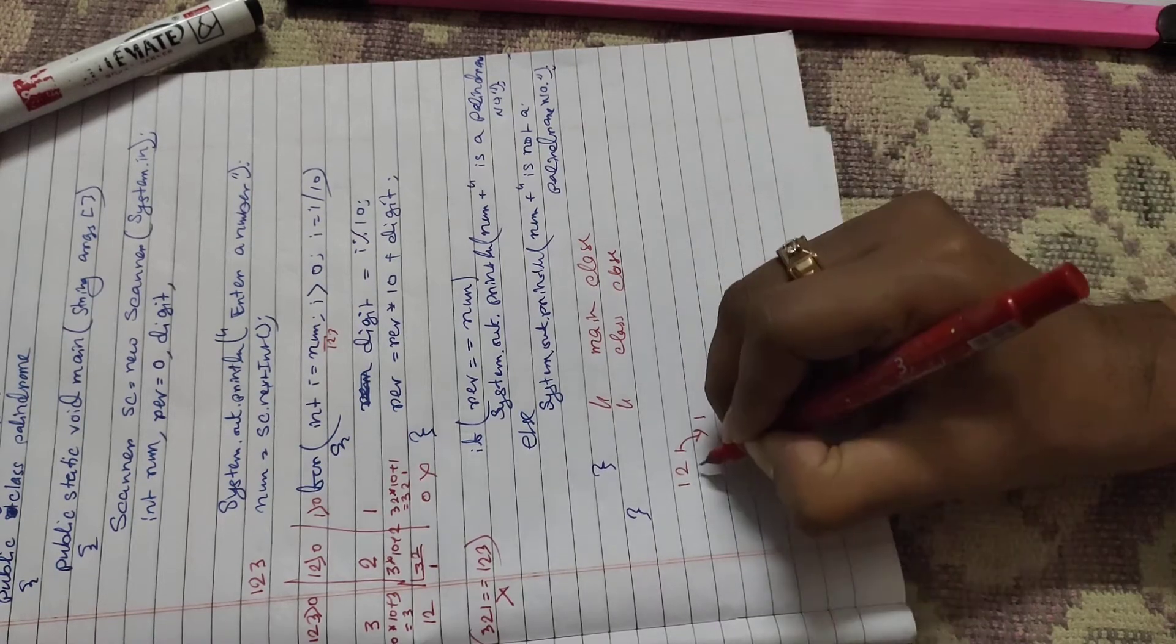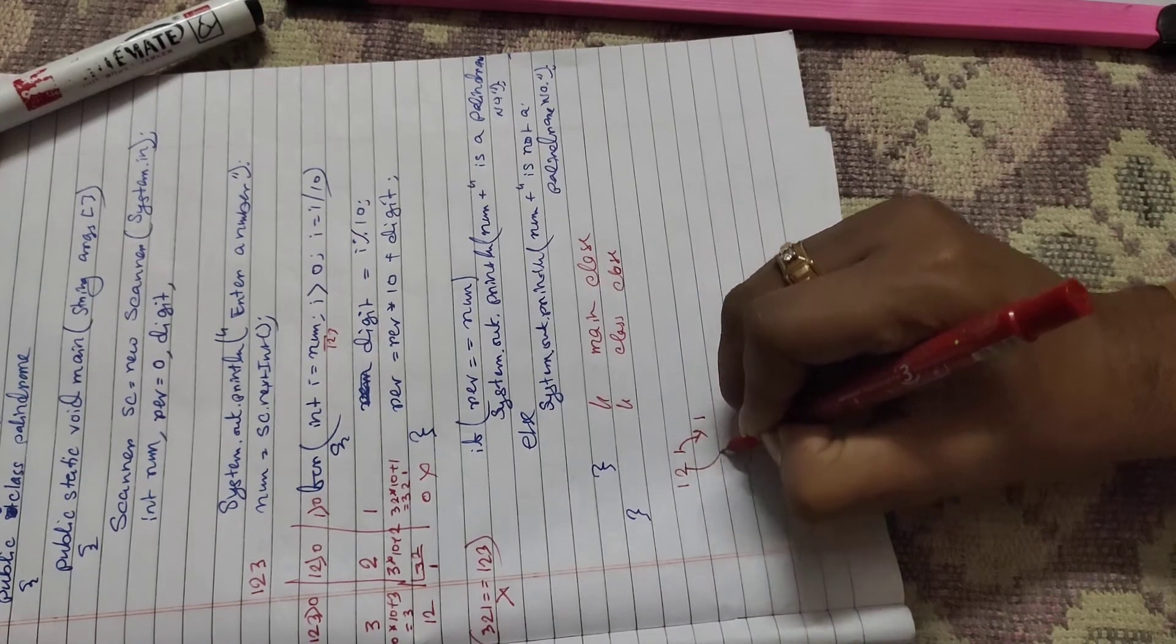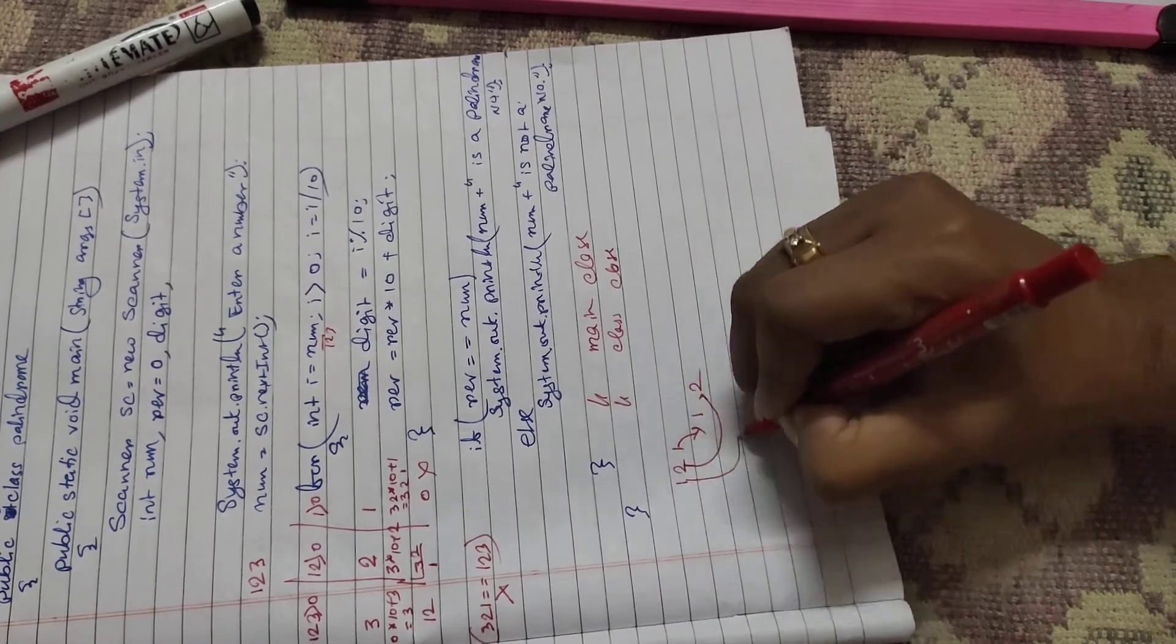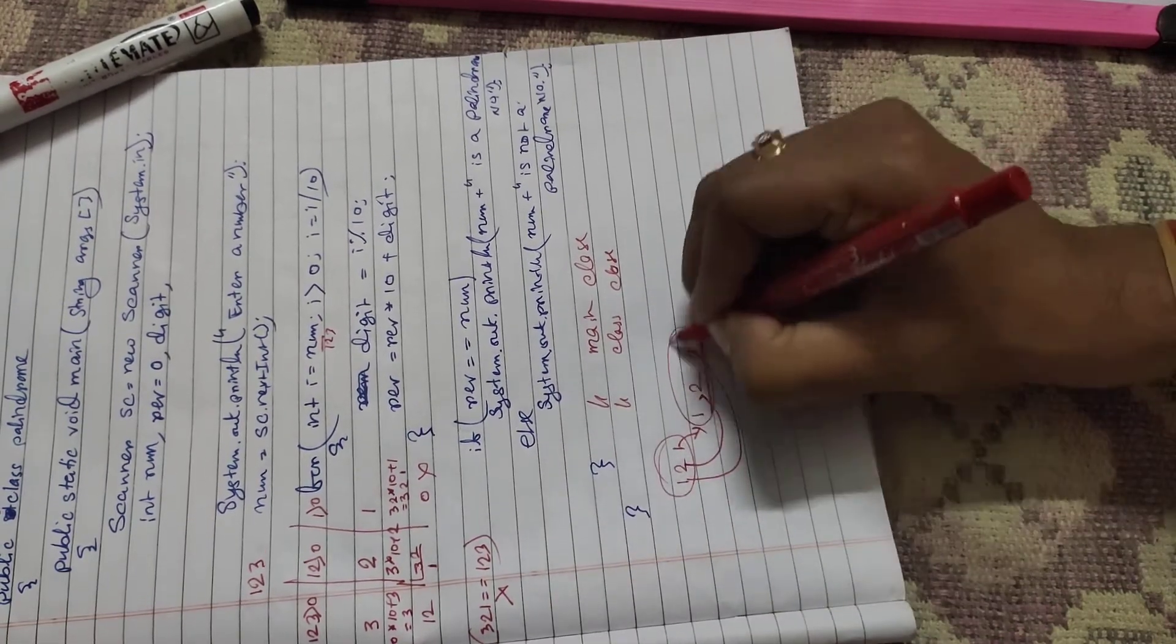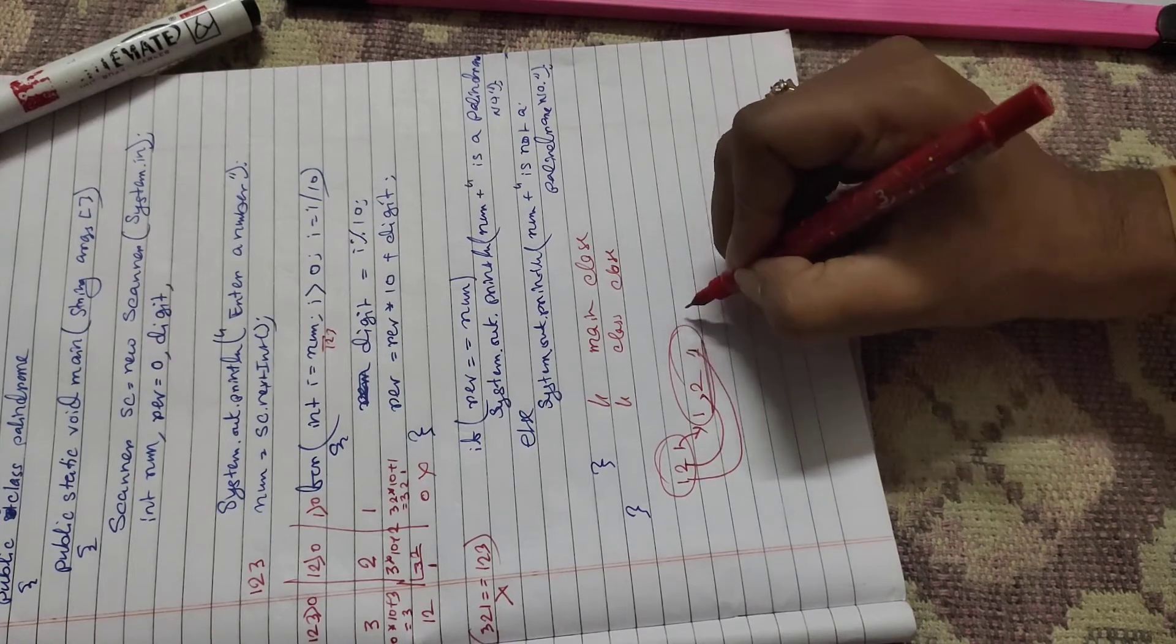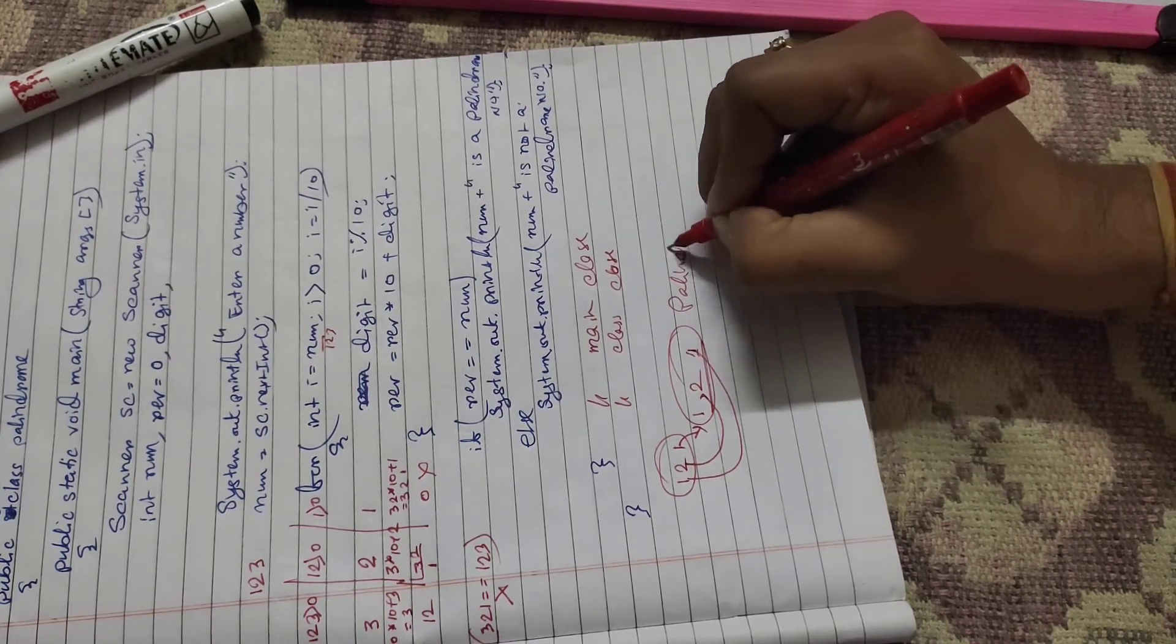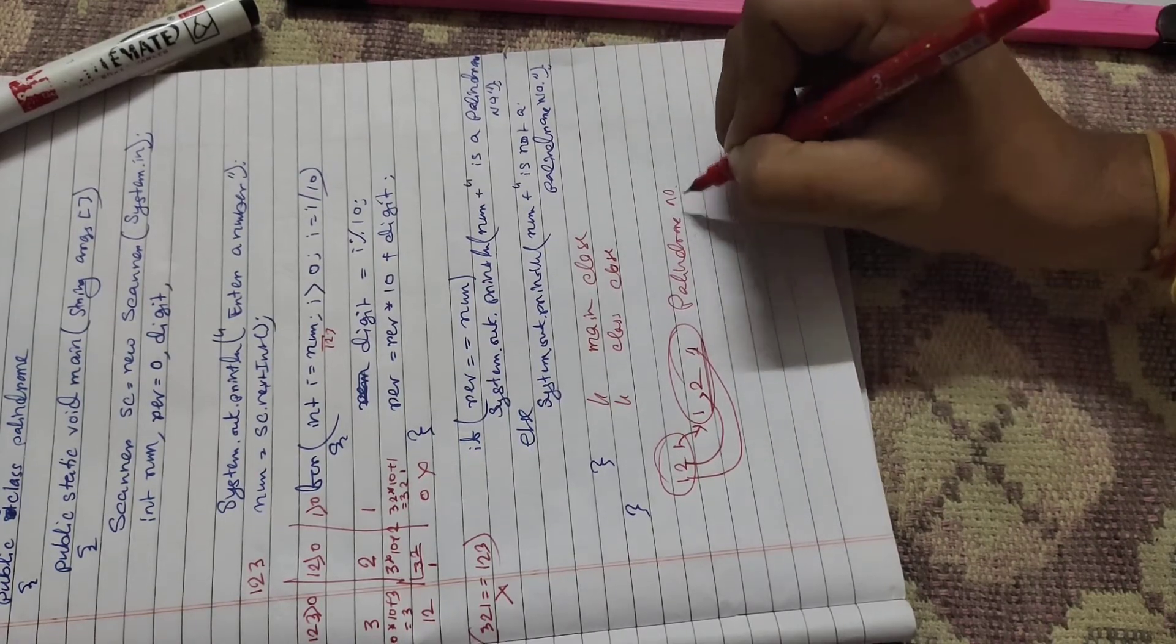First time we get 1, next we get 2, and finally we get 1. So both numbers are the same, so it is a palindrome number.